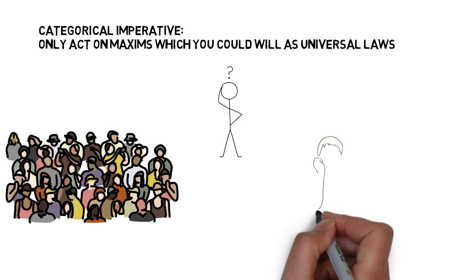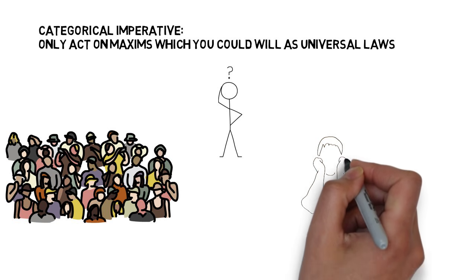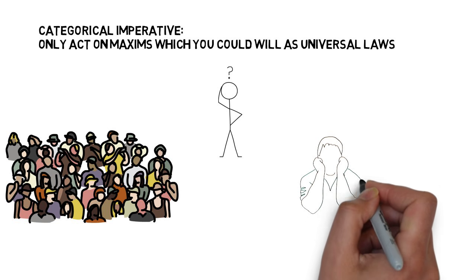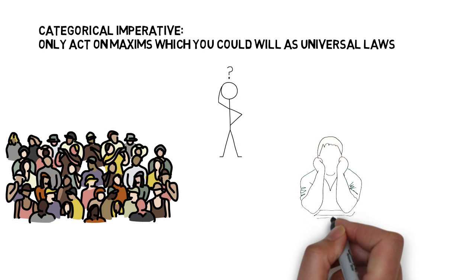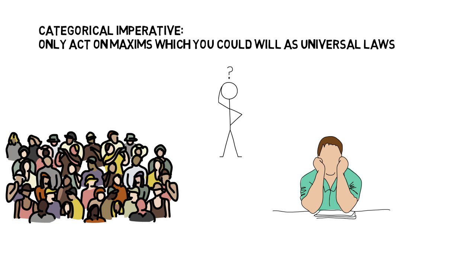For instance, when a student is considering cheating on an important test because he didn't study, he should ask himself, according to Kant, would I want to live in a world where everyone everywhere always cheated when they were taking an exam they didn't prepare for? It seems that this would be an undesirable world.